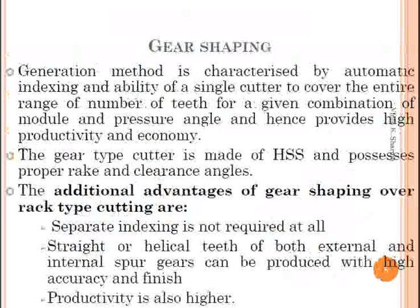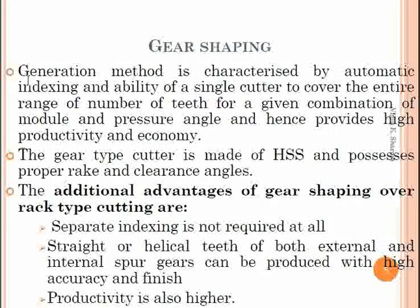Gear shaping is characterized by automatic indexing and the ability of a single cutter to cover the entire range of number of teeth for a given combination of module and pressure angle, providing high productivity and economy. The gear-type cutter has proper rake and clearance angles. Additional advantages over rack-type cutting include: separate indexing is not required, straight or helical teeth of both external and internal spur gears can be produced with high accuracy and finish, and productivity is very high.